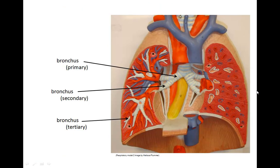Here in the lung, the model depicts the tremendous branching of the primary, secondary, and tertiary bronchial tubes.